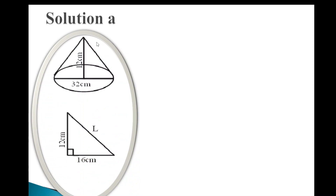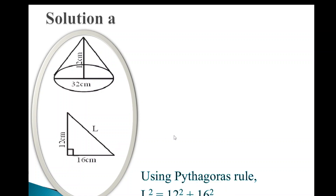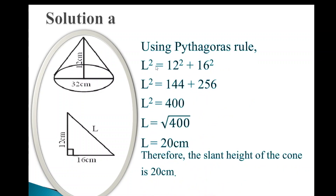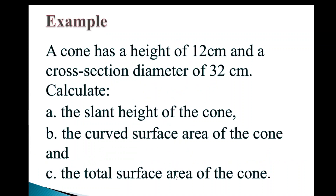Solution A: Drawing the cone, the vertical height is 12 centimeters and the diameter is 32 centimeters. The vertical height and radius form a right-angle triangle. Dividing the diameter by 2 gives a radius of 16 centimeters. Using Pythagoras' theorem: L² = 12² + 16² = 144 + 256 = 400. The square root of 400 is 20, so the slant height of the cone is 20 centimeters.